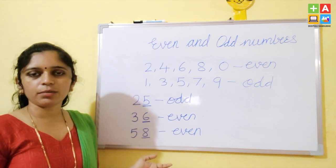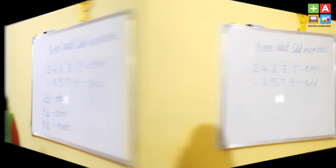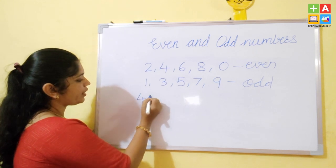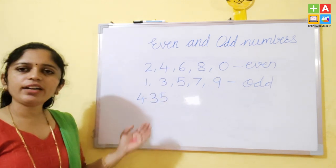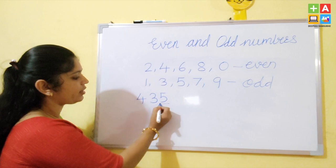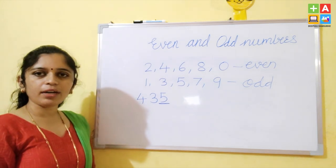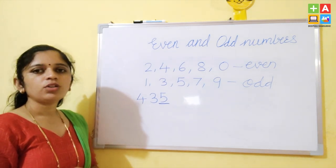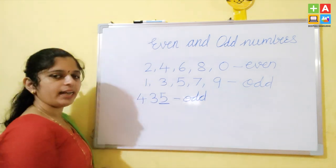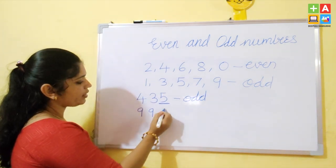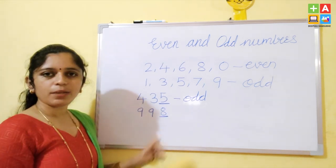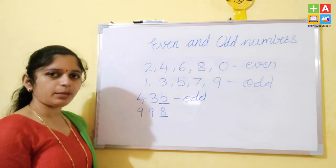Now I am taking 3-digit numbers. Taking 435 — we do the same thing: underline only the ones place number, which is 5. Will 5 come under the table of 2? No. So 435 is an odd number. Taking another example: 998 — underline the ones place number, which is 8. Will 8 come under the table of 2? Yes. So 998 is an even number.